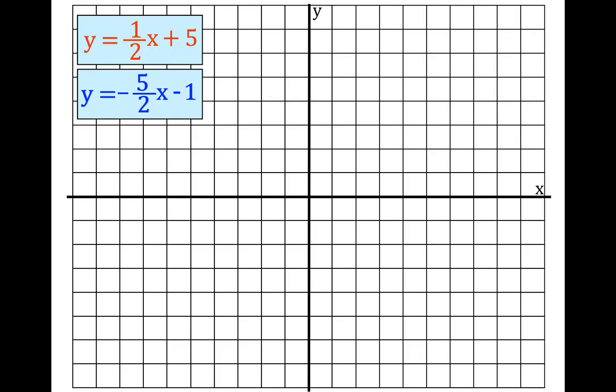That is the point where those two lines intersect each other. This is the graphisches Verfahren — this is graphing. We're going to graph both lines and see at what point these two lines intersect, and then we'll see that that point is the solution for both of these equations.